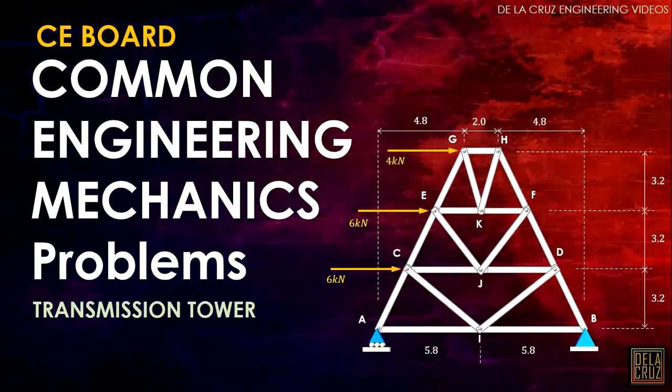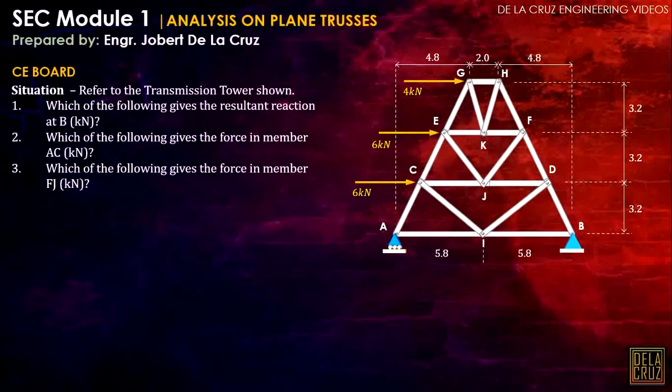So here is the problem. Referred to the transmission tower shown, the questions are: which of the following gives the resultant reaction at B? Which of the following gives the force in member AC? And which of the following gives the force in member FJ? These choices came from the book of CA Reference 4 by DIT Gilisan. You can check this problem on that book.